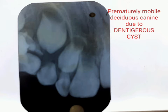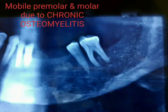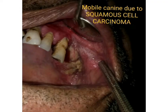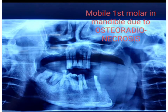This deciduous canine had premature root resorption and mobility due to a dentigerous keratocyst developing around the permanent canine. In another case, the premolar and molar were mobile because of chronic osteomyelitis. Again, this second molar with root canal treatment had become mobile due to a dentigerous keratocyst around an impacted third molar. For another patient, the canine in the maxilla was mobile because of squamous cell carcinoma. In a post-surgery, post-radiotherapy patient, the first molar in the mandible developed mobility due to osteoradionecrosis.